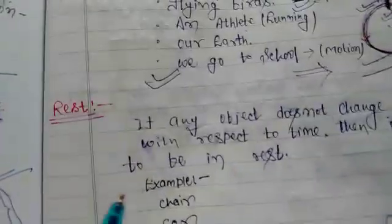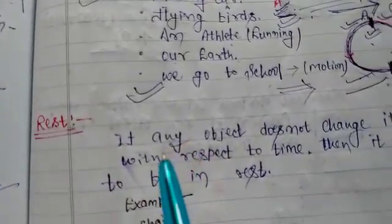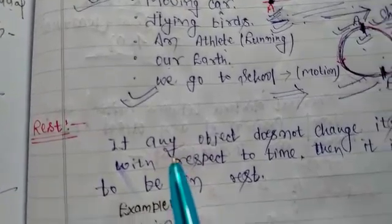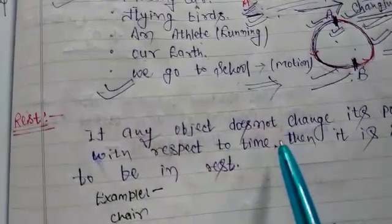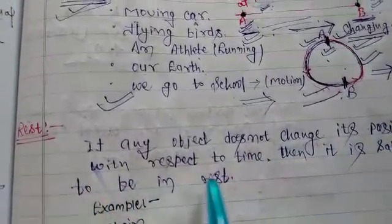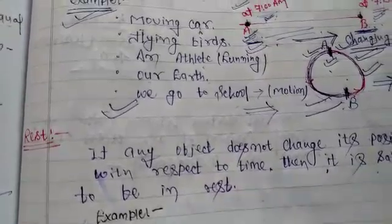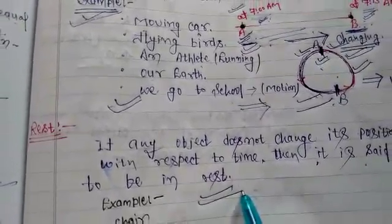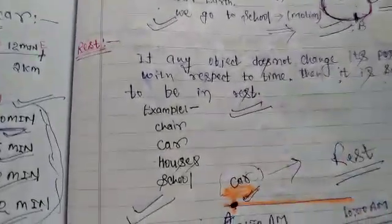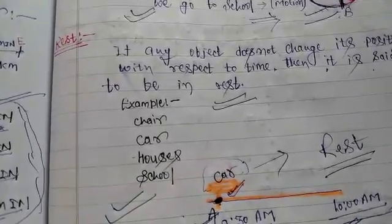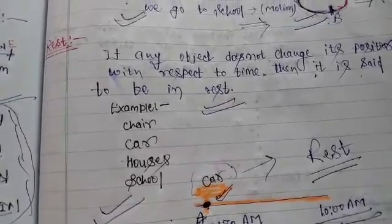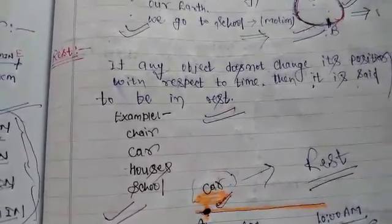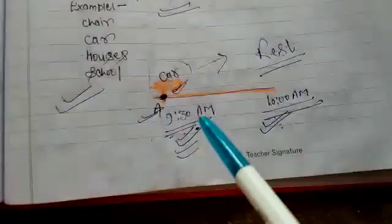Now the next topic is rest. What is rest? According to the definition of rest: if any object does not change its position with respect to time, then it is said to be in rest. Examples of rest: a chair, a car, houses may be in rest if these things do not change their position with respect to time.